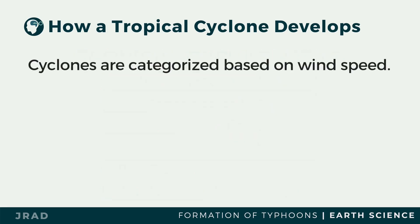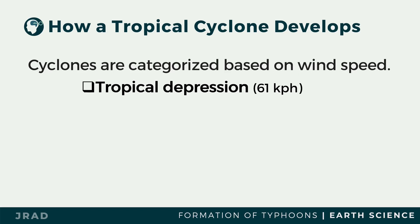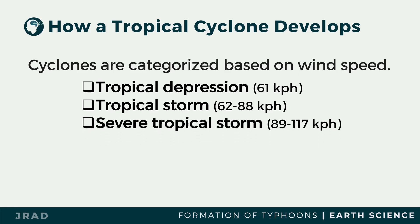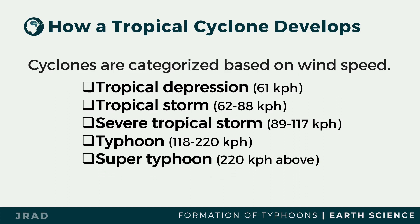Cyclones are categorized based on wind speed. A tropical depression has maximum sustained winds of up to 61 kilometers per hour. A tropical storm has wind speeds ranging from 62 to 88 kilometers per hour. Severe tropical storms have wind speeds of 89 to 117 kilometers per hour. Typhoons have maximum wind speeds of 118 to 220 kilometers per hour. A super typhoon has maximum speed exceeding 220 kilometers per hour.